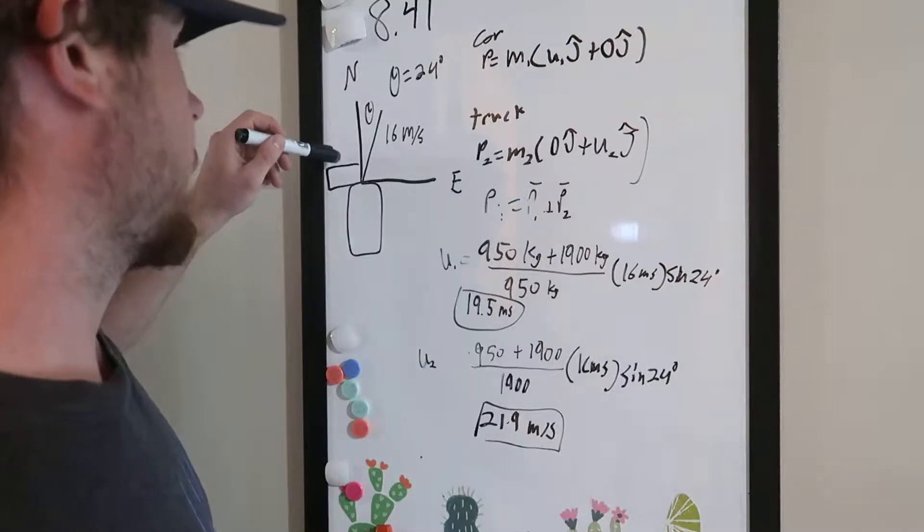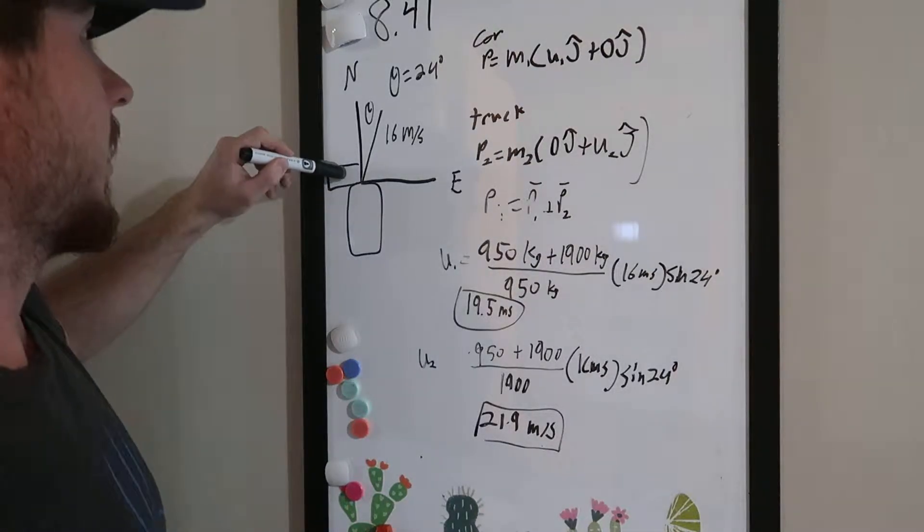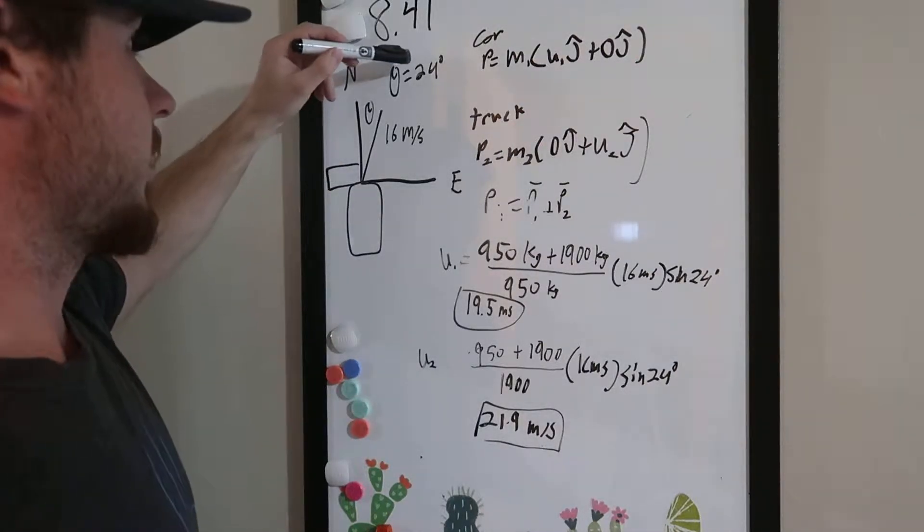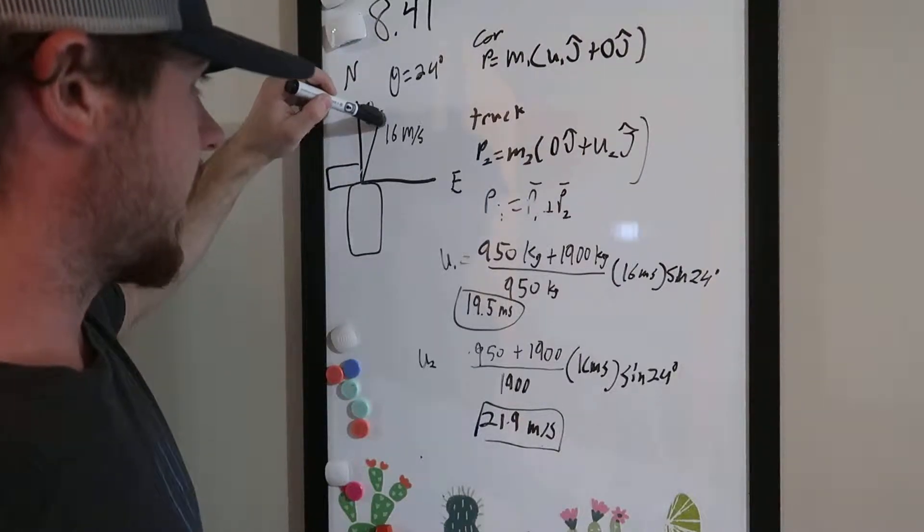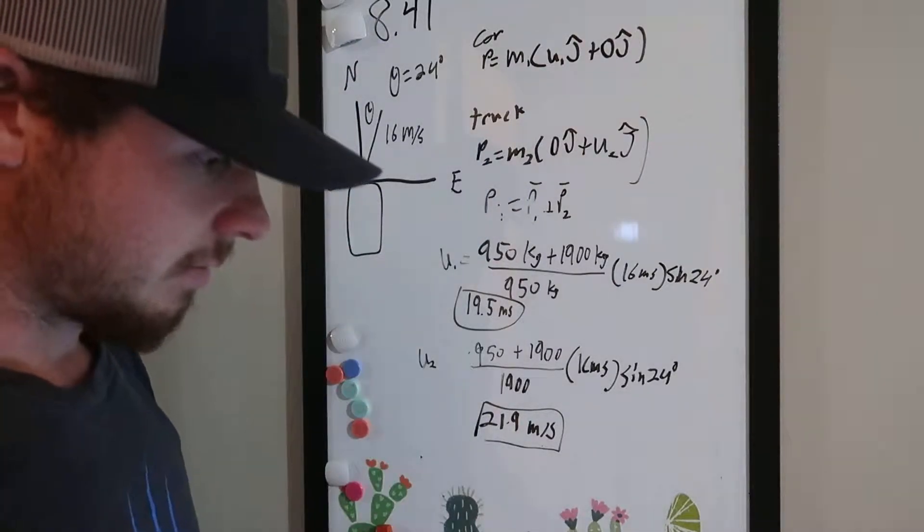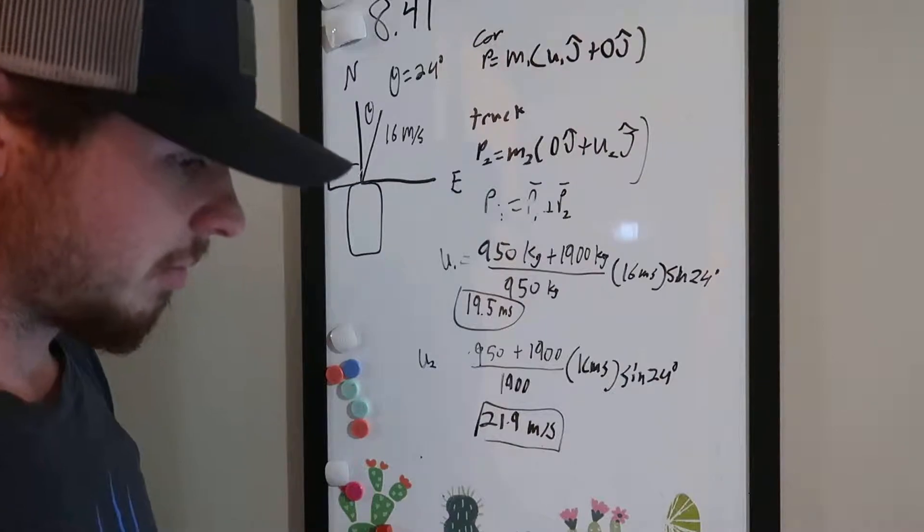So I kind of drew a picture here. So here's the truck and the car, and then theta is equal to 24 degrees, and then they're sliding at 16 meters a second. And so we know that the initial momentum vector of the truck,